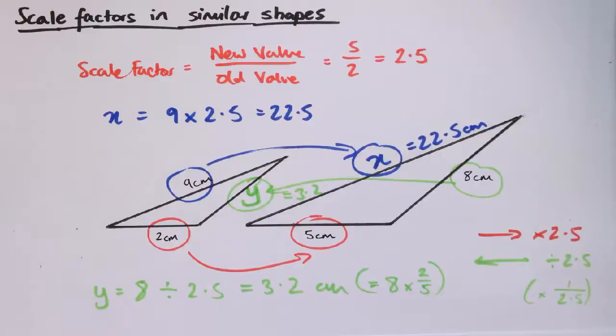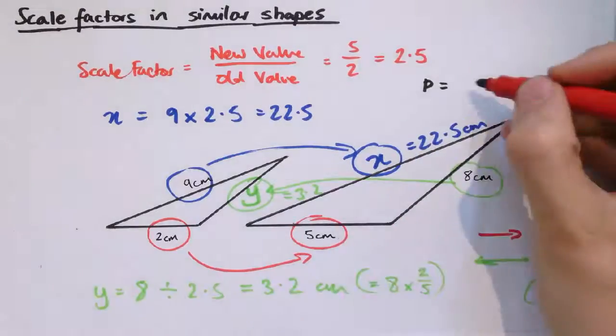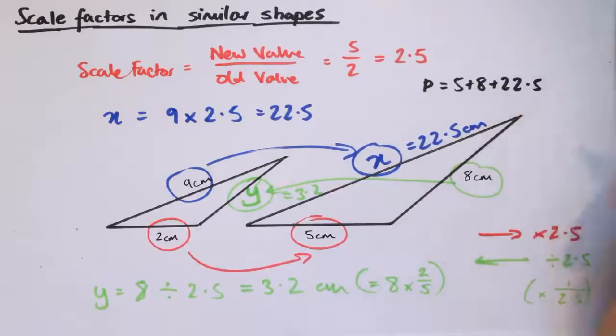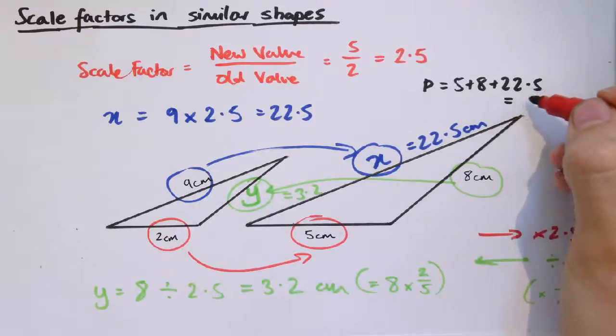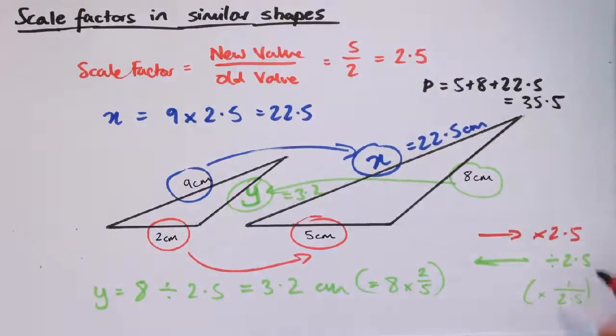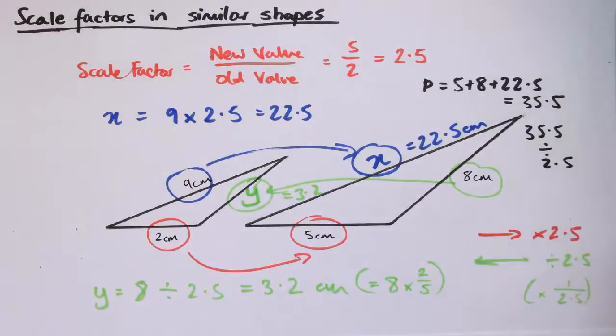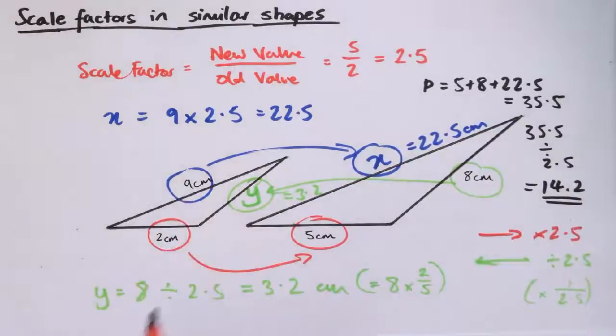A powerful idea, because if we have similar shapes and we know the scale factor, we can find missing lengths. And it doesn't apply just to lengths of sides. It could be the length of the whole perimeter. So for example, on the right here, we've got the perimeter is, in the perimeter of this one, is 5 plus 8 plus 22.5. That's 35.5. And if we take 35.5 and divide it by 2.5, then we get 14.2, which is the perimeter over here. 9 plus 2 plus 3.2 is 14.2.